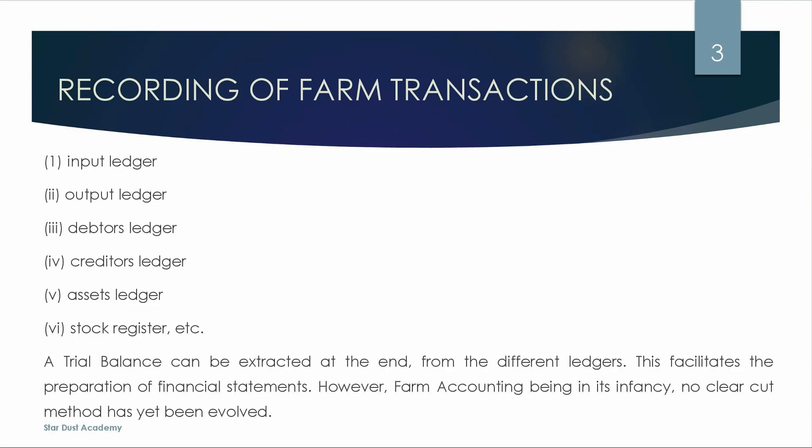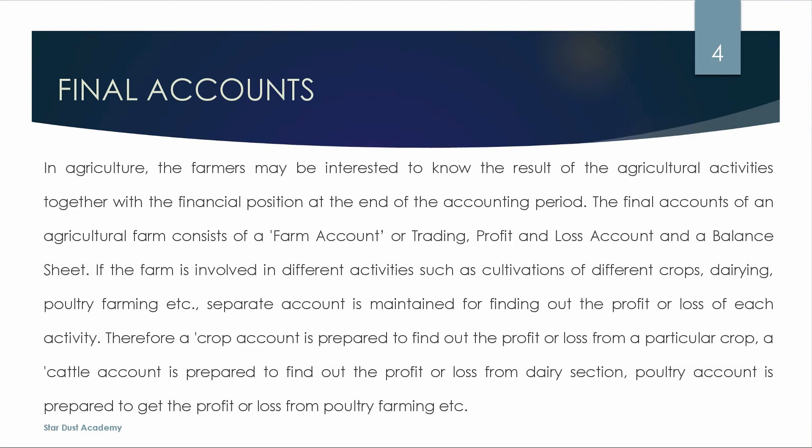A trial balance can be extracted at the end from the different ledgers. This facilitates the preparation of financial statements. For small farms we keep the cash book; for large farms we maintain input ledger, output ledger, debtors, creditors, asset ledger, and stock register. From these we prepare the trial balance and then the final accounts.